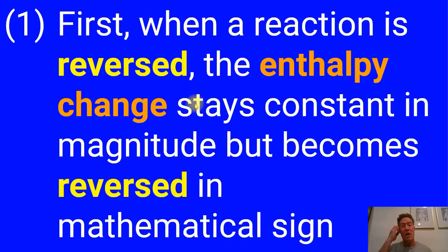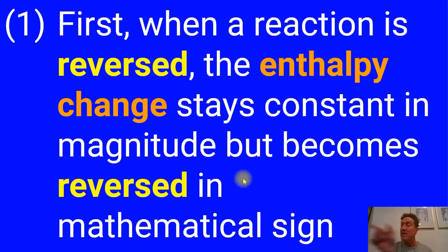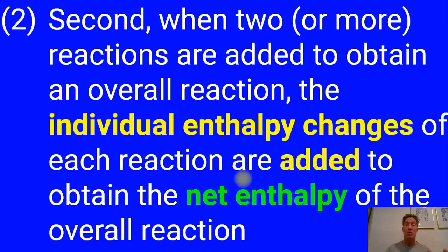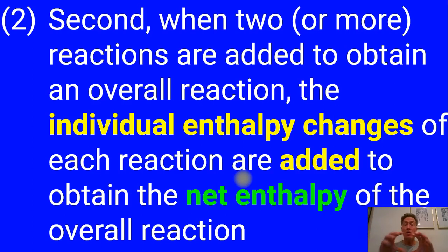Two key principles of Hess's Law: First, if you reverse a reaction, the energy reverses — same magnitude, opposite sign. So a combustion reaction that is exothermic in the forward direction will be endothermic if run backwards. Second, you can add two or more reactions together to obtain an overall reaction and sum the individual enthalpy changes to get the net enthalpy. You can flip, double, or halve equations — whatever you do to the reaction, you do to the delta H.